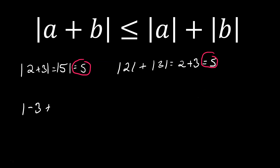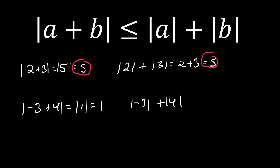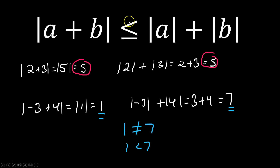Now let's try negative 3 plus 4 following the left side: absolute value of negative 3 plus 4 is the absolute value of positive 1, which is 1. Now doing them independently on the right side: absolute value of negative 3 plus absolute value of 4, applying the bars first, gives 3 plus 4, which is 7. So 1 is definitely not equal to 7 — instead, 1 is less than 7. Here the less than part of the symbol is the relevant one.